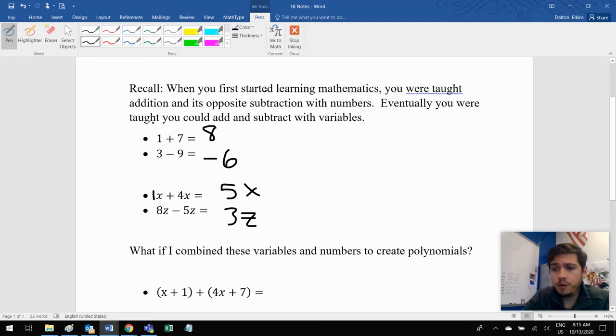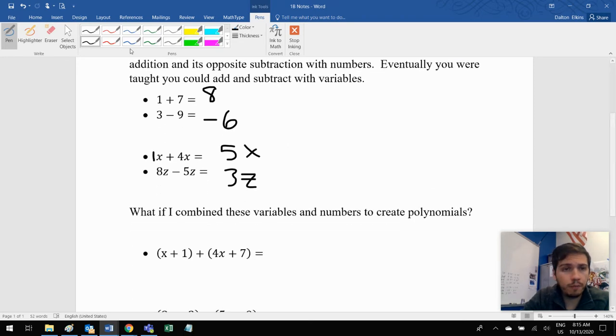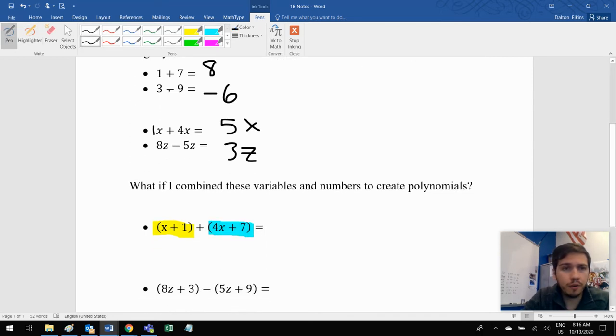Now, the question for this new unit is going to be, what if I combined the variables and numbers? What if I took these and combined them to create polynomials? So if I had X plus one in parentheses there, you'll notice parentheses have been really important in the school year. And then I add four X plus seven. And actually what I have to do is I have to look at the X pieces. I'm going to put those together. So X plus four X. And then there's a plus there. There's this plus right here. And then let's take our non X pieces or our number pieces, which is the one and the seven.